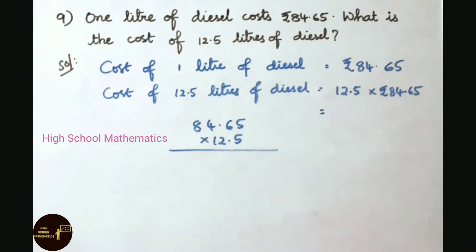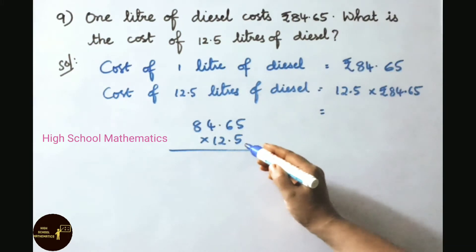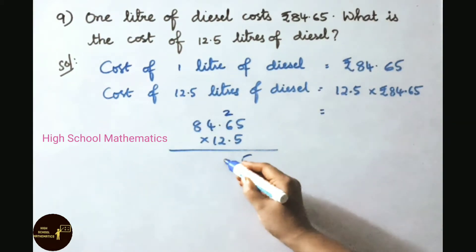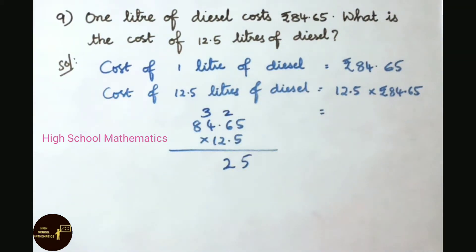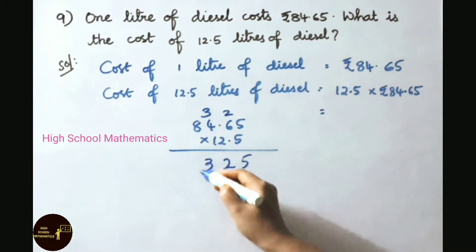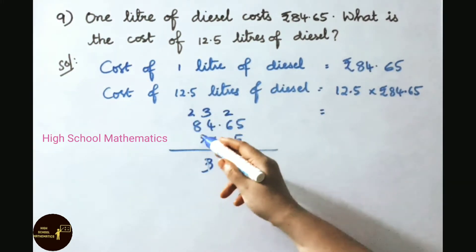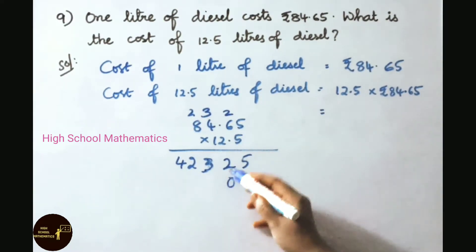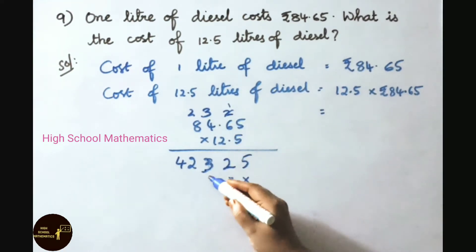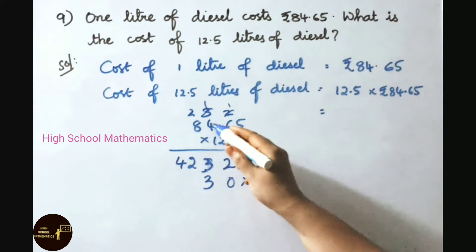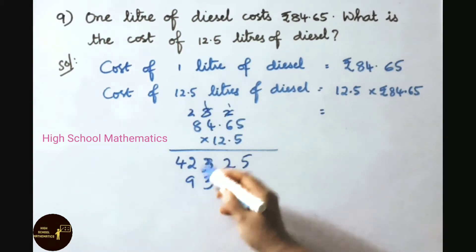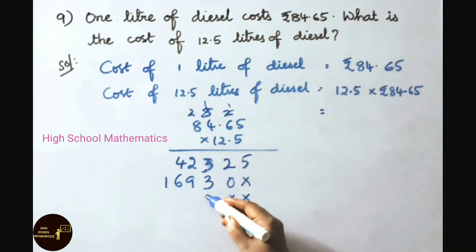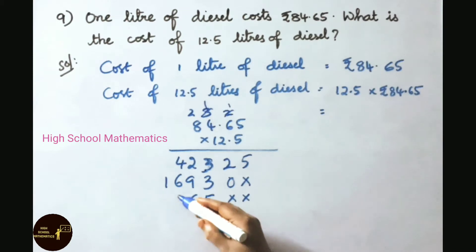Multiply with 5: 5 fives are 25, write 5 carry 2; 5 sixes are 30 plus 2 is 32, write 2 carry 3; 5 fours are 20 plus 3 is 23, write 3 carry 2; 5 eights are 40 plus 2 is 42. Now multiply by 2: 2 fives are 10, write 0 carry 1; 2 sixes are 12 plus 1 is 13, write 3 carry 1; 2 fours are 8 plus 1 is 9; 2 eights are 16.